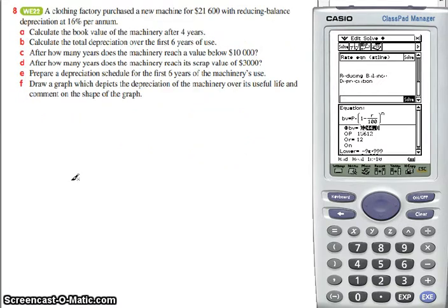So let's look at a question. Here's my cost of my new machine, $21,600. This is P. 16% per annum. That's my r. So firstly it asks to calculate the book value after 4 years. So my P is 21,600.